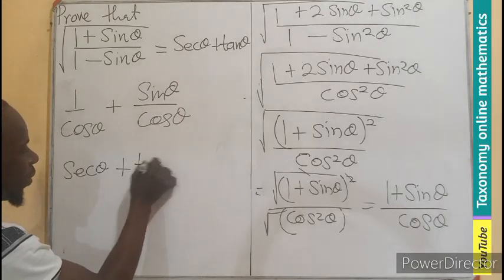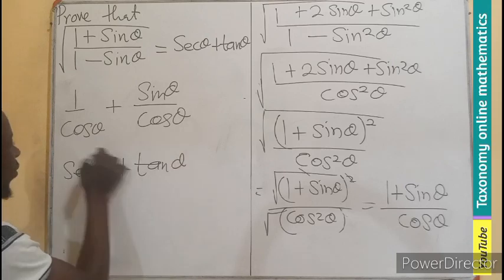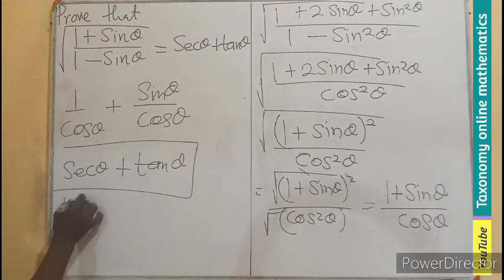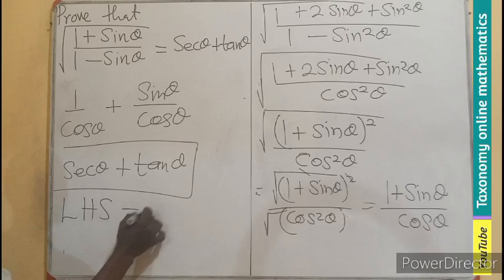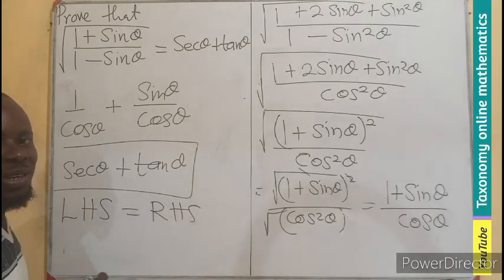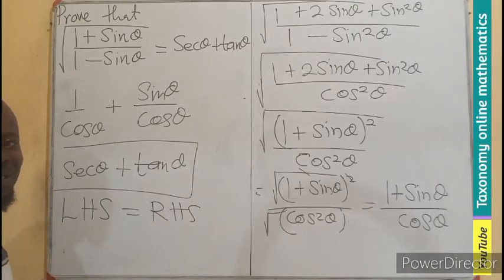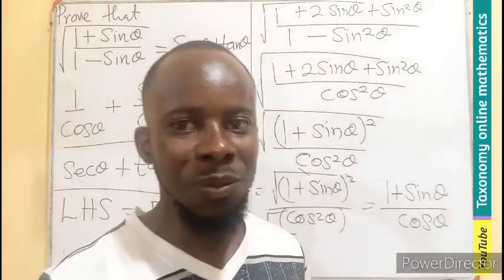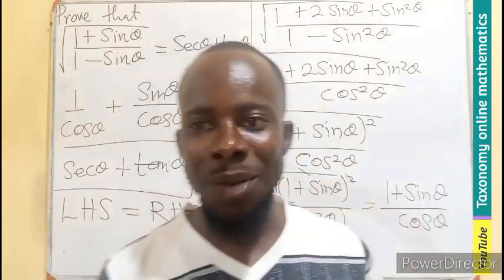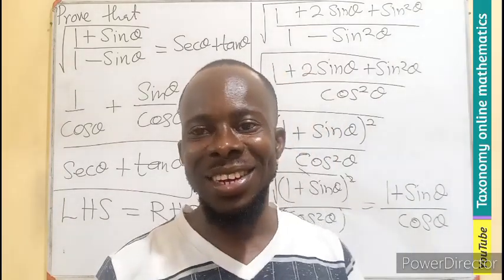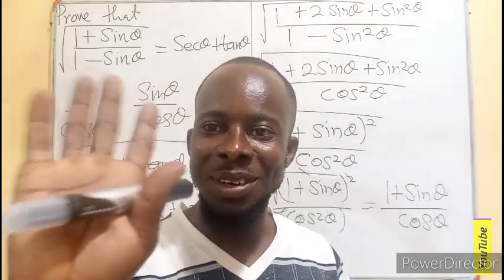So we have proved that the left hand side equals the right hand side — the statement is proved. I believe you followed. Take your time and go through it. Please share and comment. Bye-bye.